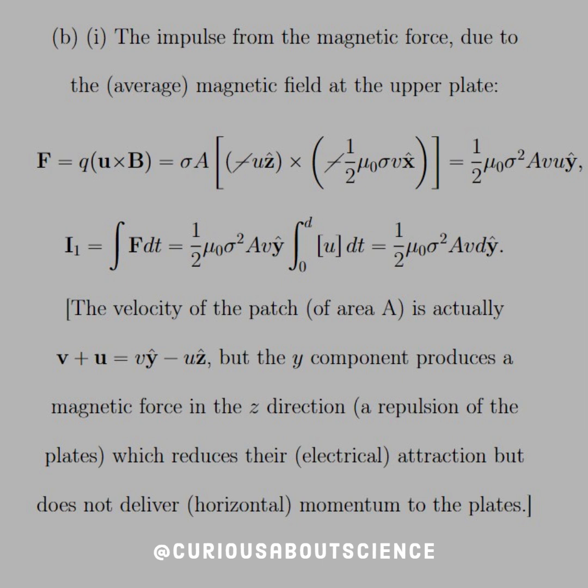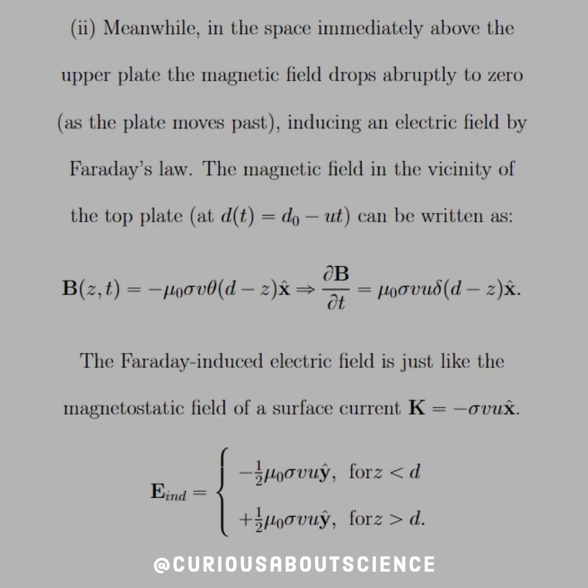So moving this on through, what we see is the velocity of patch of area A is actually v plus u, where v is in the y-hat direction, u is in the z-hat direction. But the y component produces a magnetic force in the z-direction, a repulsion of the plates, which reduces their electrical attraction but does not deliver horizontal momentum to the plates.